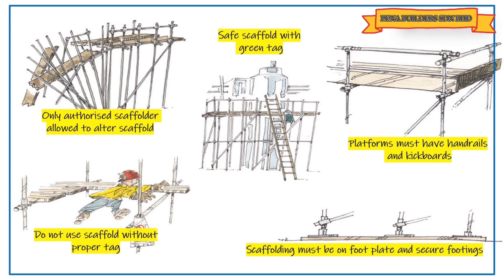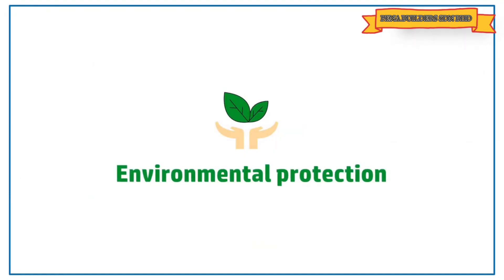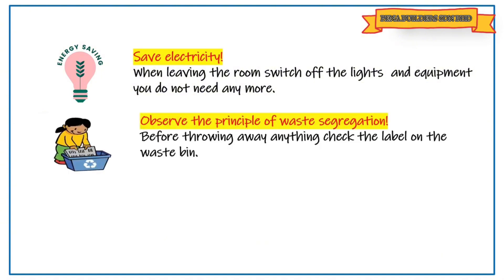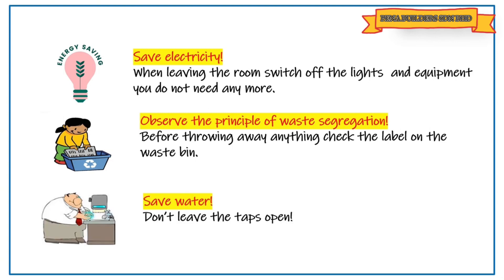Environmental protection: save electricity — when leaving a room, switch off all lights and equipment no longer needed, and close doors to heated or cooled areas. Observe the principle of waste segregation — before throwing anything away, check the label on the waste bin. Save water — do not leave taps open.